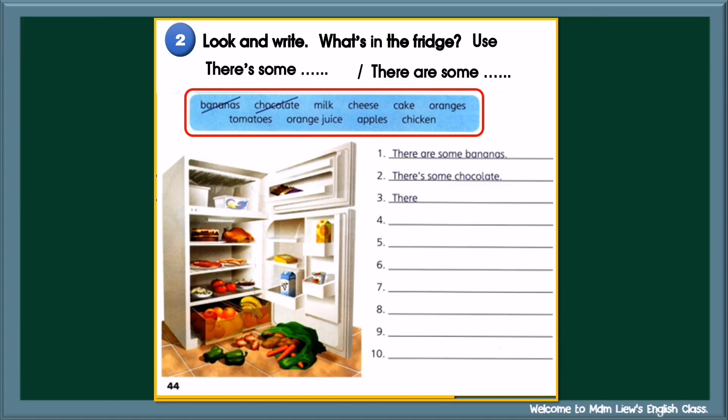Begin your sentences with there's some for uncountable nouns or there are some for countable nouns in the plural form. Example 1: Bananas — countable plural noun. So, begin your sentence with there are some. There are some bananas. Example 2: Chocolate — uncountable noun. So, begin your sentence with there's some. There's some chocolate.